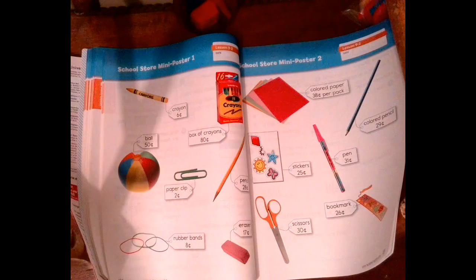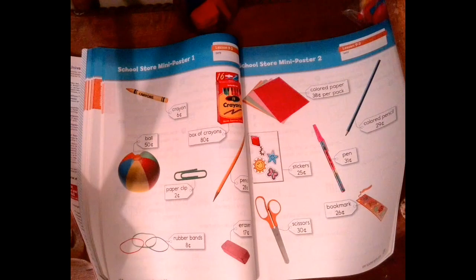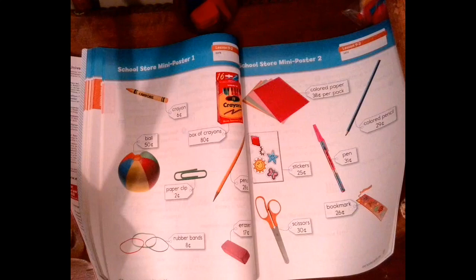Welcome to math. Today we're going to work with two-digit number stories, so you're going to tell, model, and solve number stories with two and three addends. Remember, addends are the numbers that you're adding together, the sum is the number that it equals.